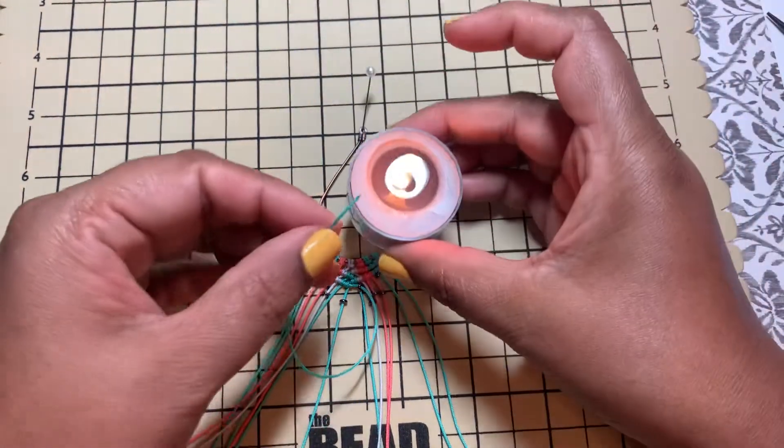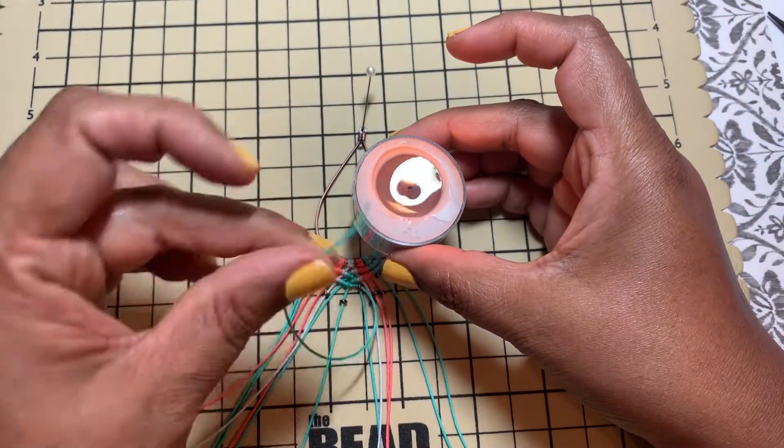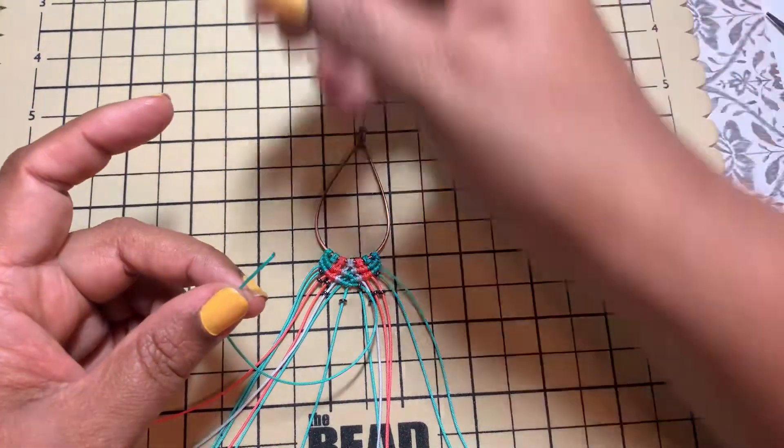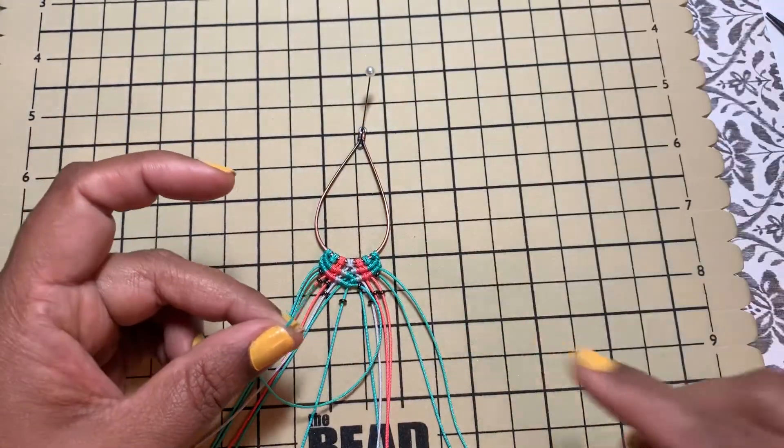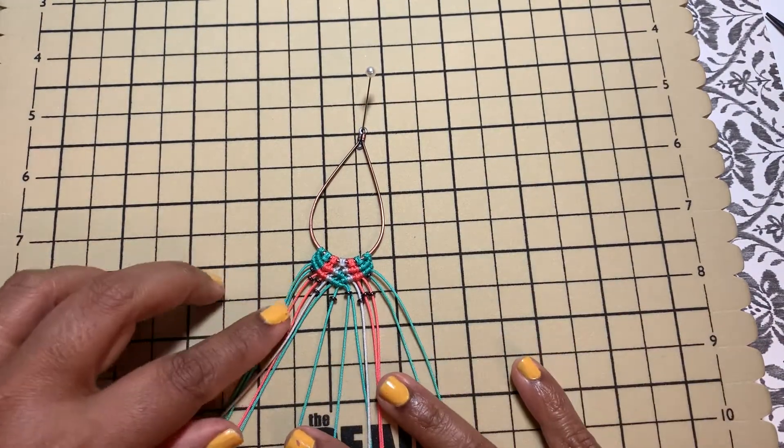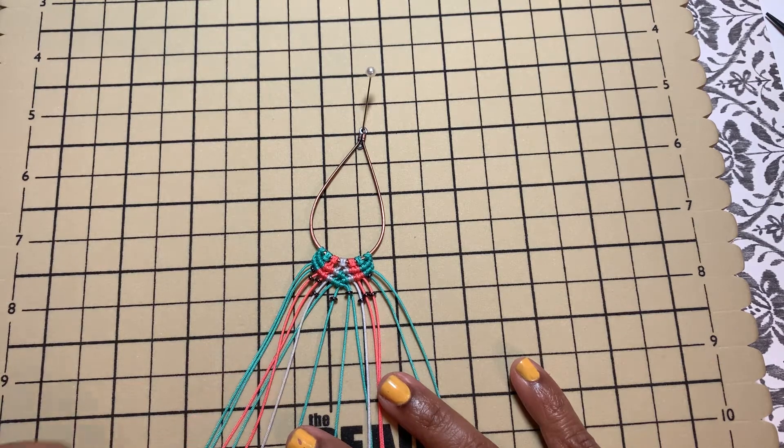You can just take a small tea candle and melt the edge, then you'll find the beads will go very nicely inside the thread once it's melted. So I went ahead and strung the beads in a different format.